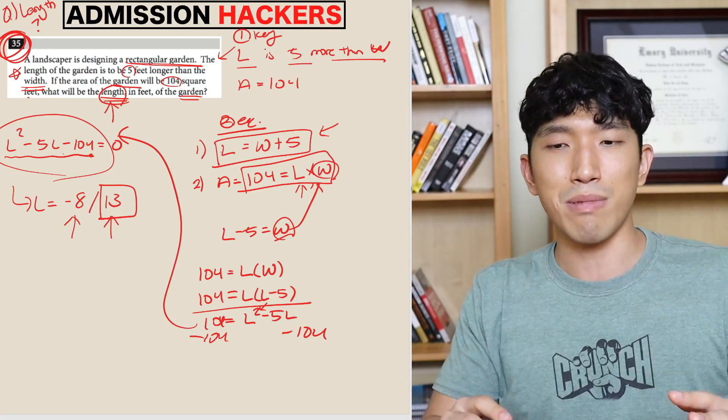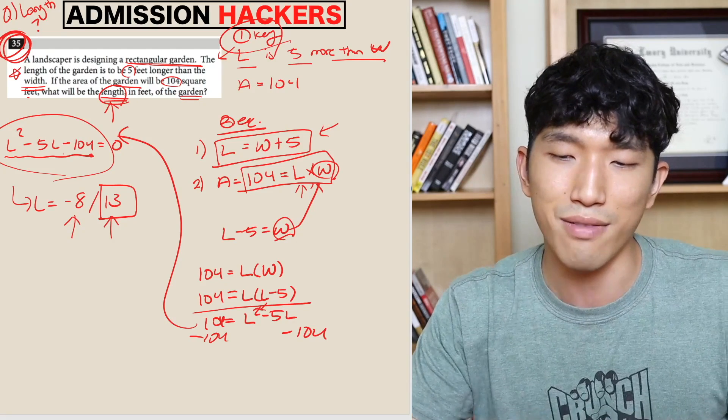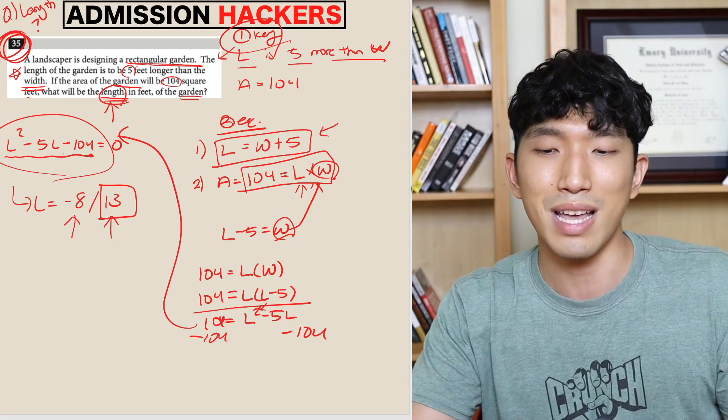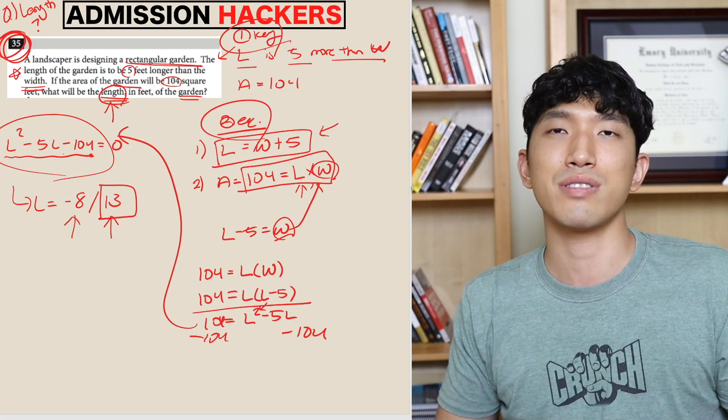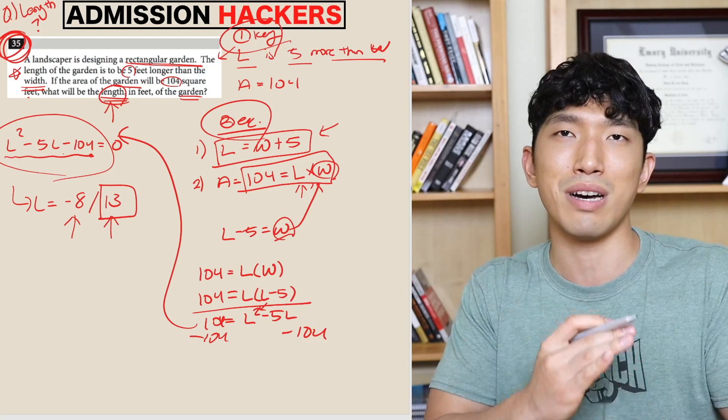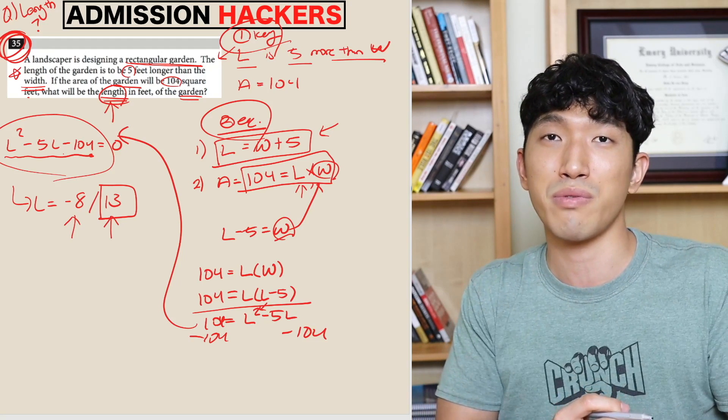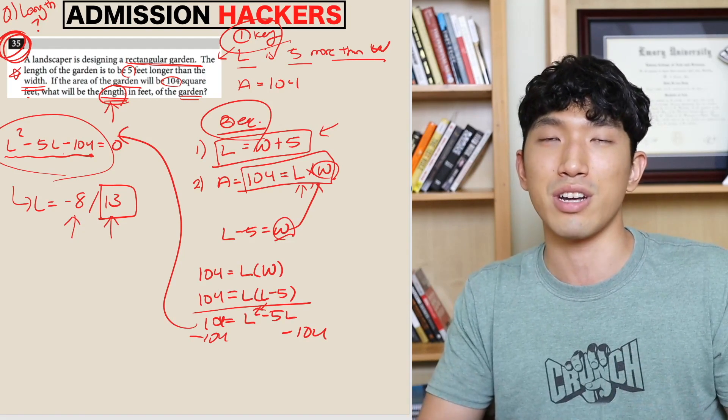So it's the same process every time: first identify the key information, then make equations from it, and solve using systems of equations. That's exactly how you solve these word problems — identify key information, create equations, and solve.